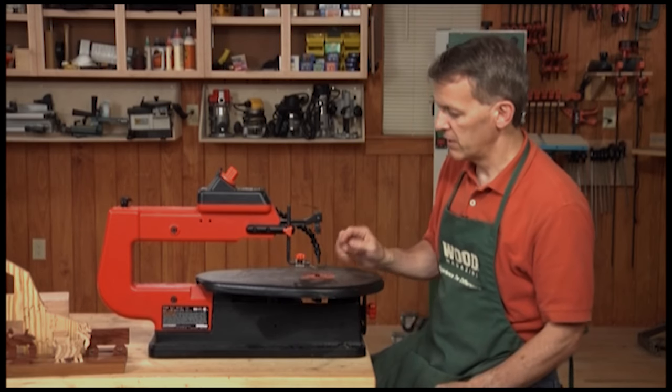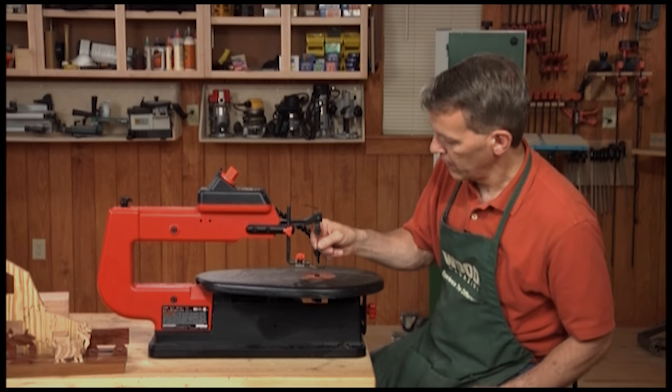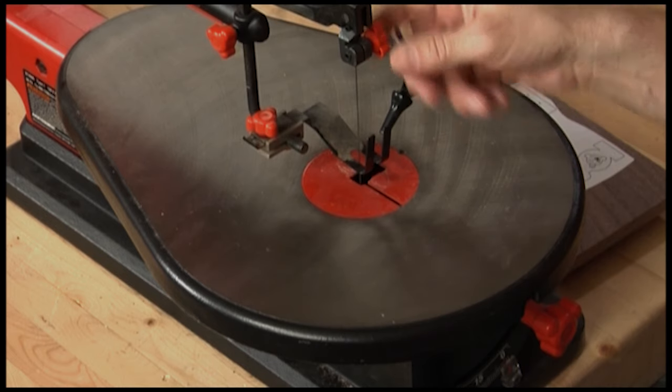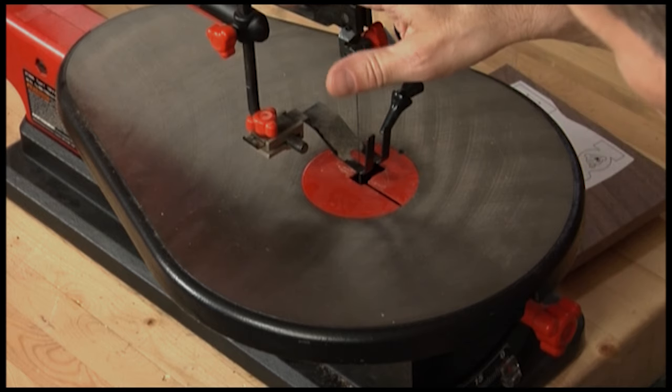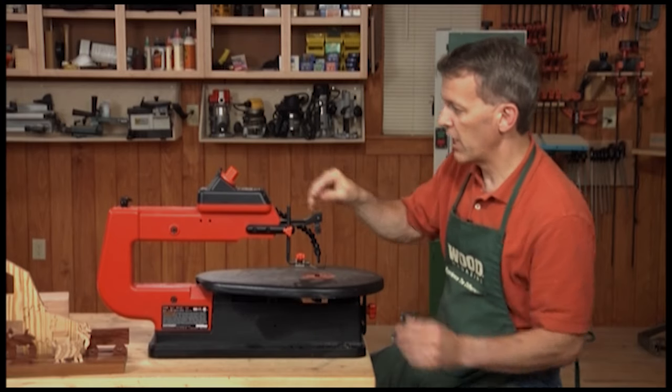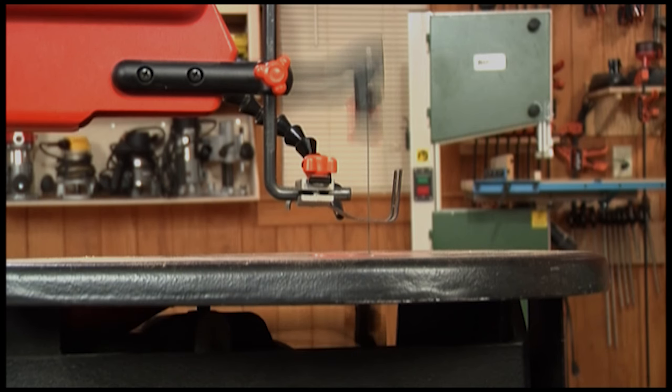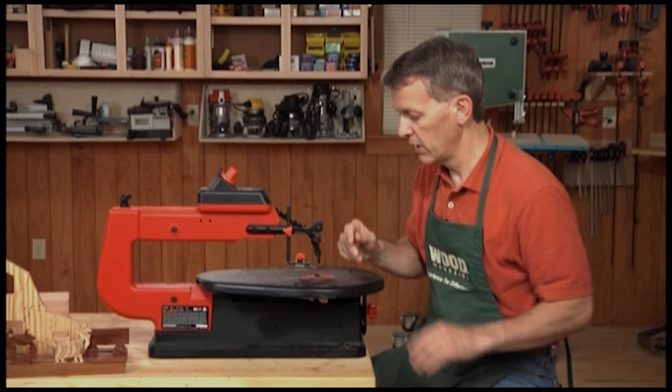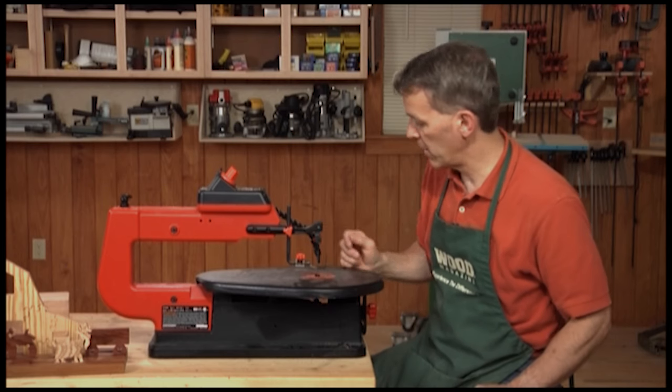A scroll saw consists of a blade here, and these come in various widths. It's extended between an arm above the table and an arm below the table. And these arms bounce up and down together like this. It oscillates that saw blade up and down so that you can cut out parts according to a pattern.